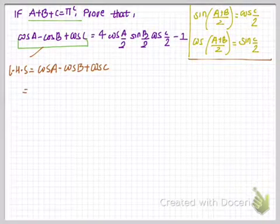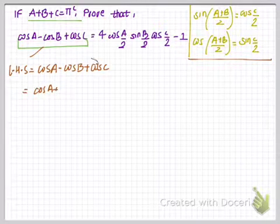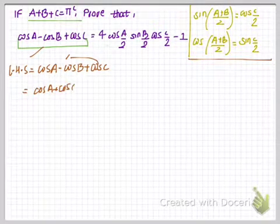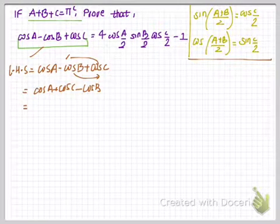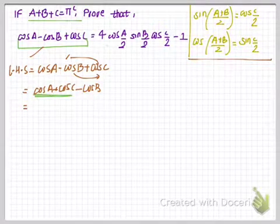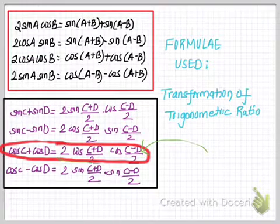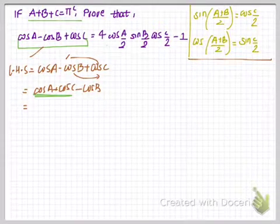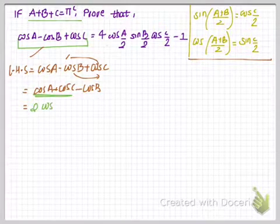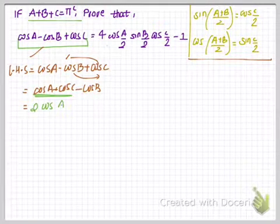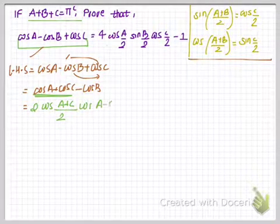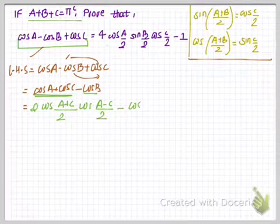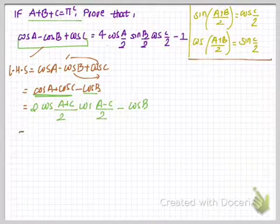Now taking the left hand side of the equation, I'll do a simple rearrangement — bringing cos C together and the negative cos B to the end. I'll apply the sum-to-product formula: cos C + cos D = 2 cos((C+D)/2) · cos((C−D)/2). In place of C and D I have A and C, so I get 2 cos((A+C)/2) · cos((A−C)/2) − cos B.